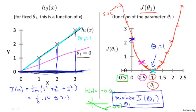To wrap up, in this video we looked at some plots to understand the cost function. We simplified the algorithm to only one parameter theta_1 by setting theta_0 to 0. In the next video, we'll go back to the original problem formulation and look at visualizations involving both theta_0 and theta_1 — without setting theta_0 to 0 — to give an even better sense of what the cost function J is doing in the original linear regression formulation.